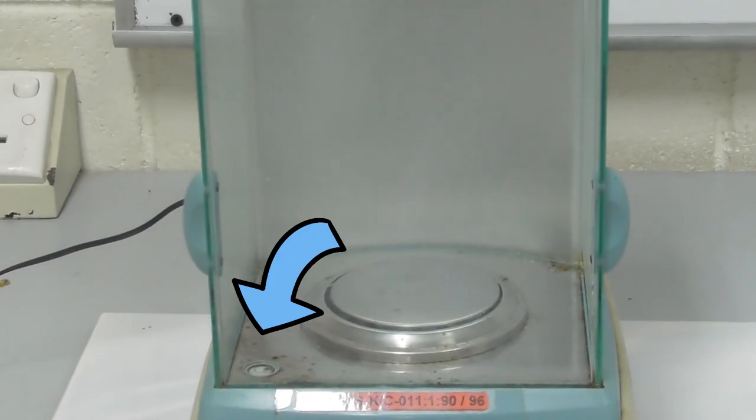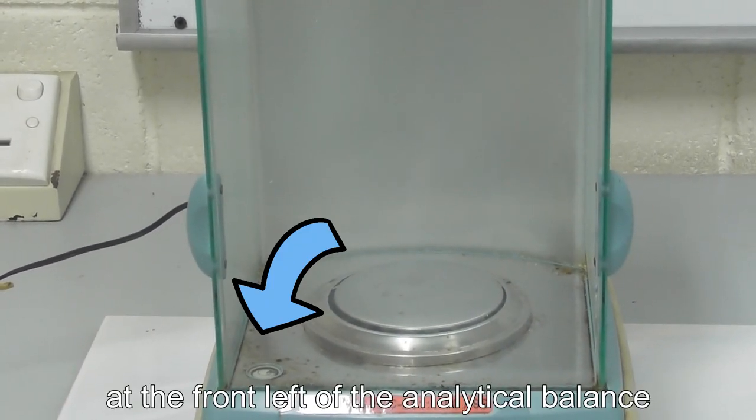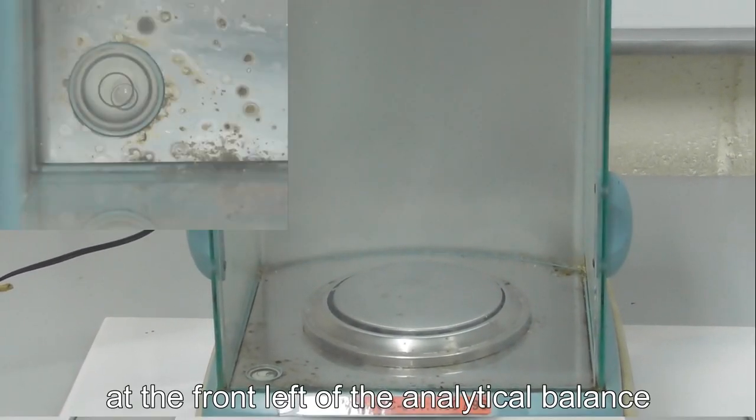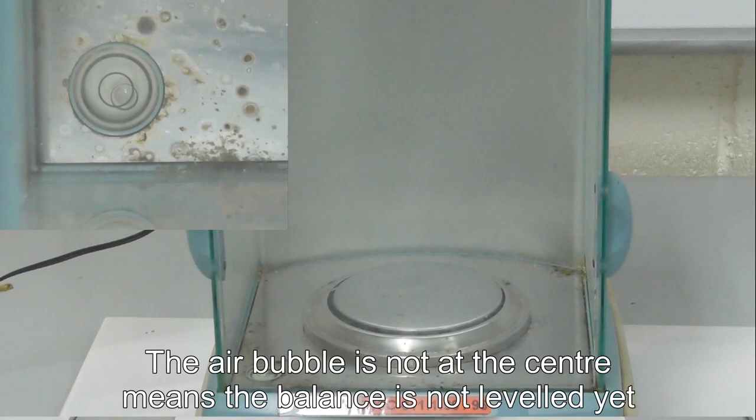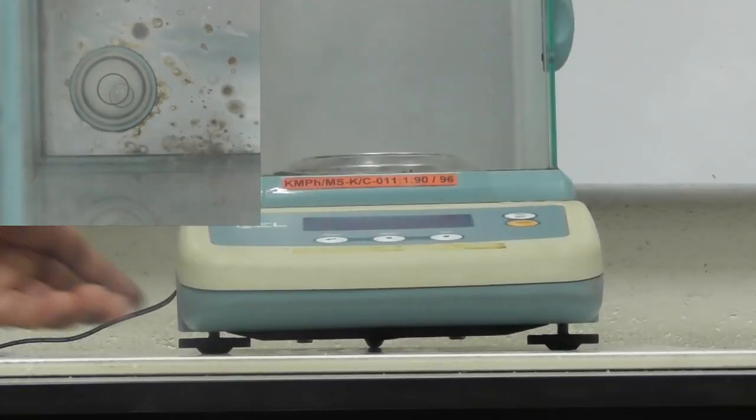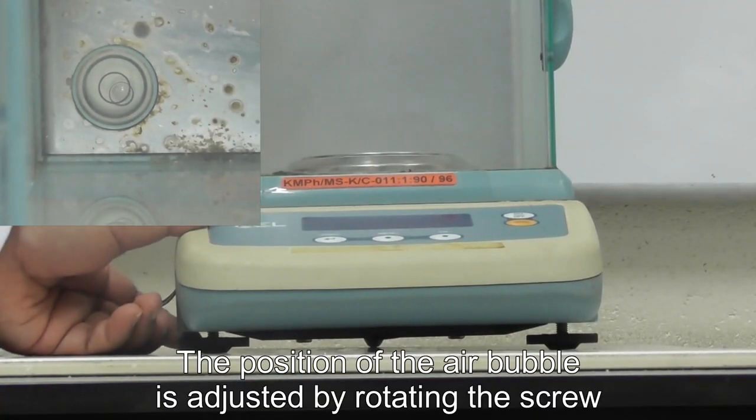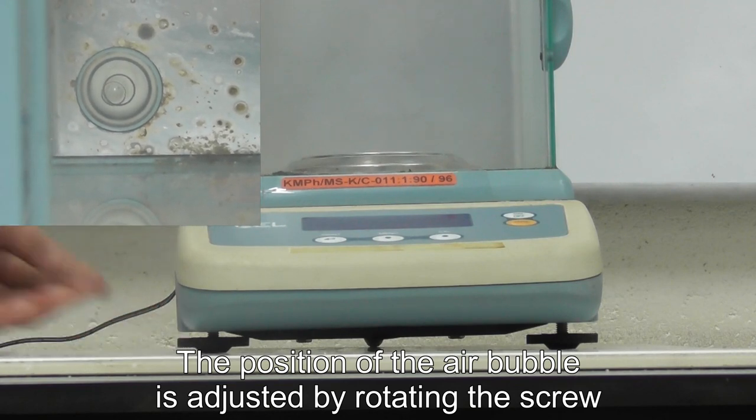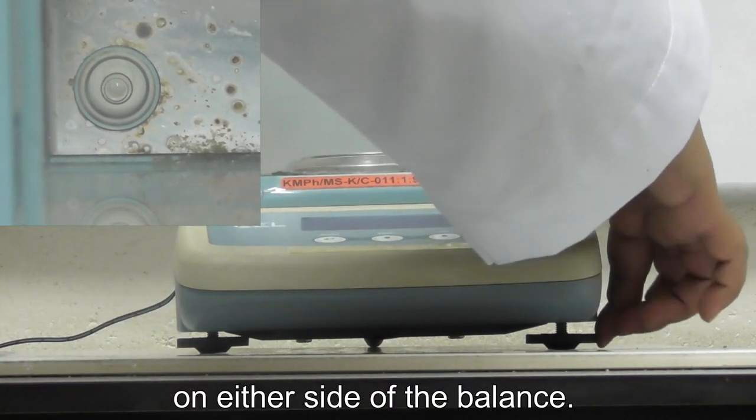Or at the front left of the analytical balance. The air bubble not at the center means the balance is not leveled yet. The position of the air bubble is adjusted by rotating the screw on either side of the balance.